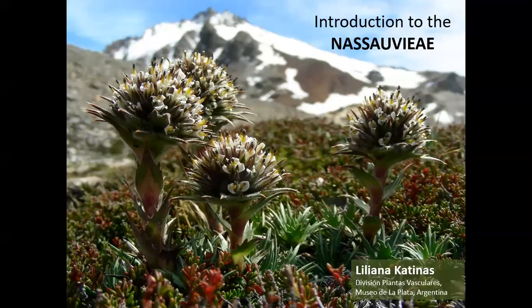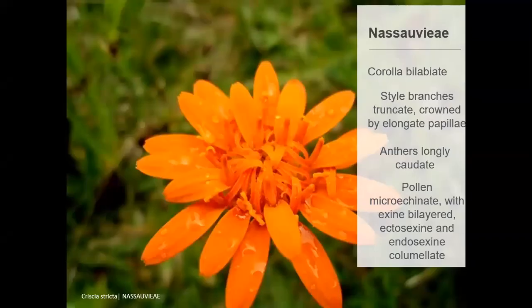I will start with an introduction to the Nassauvieae. The diagnostic features of Nassauvieae are corollas bilabiate, style branches truncate, crowned by elongate papillae, anthers longly caudate, pollen microechinate with exine bilayer ectosexine and endosexine columellate.